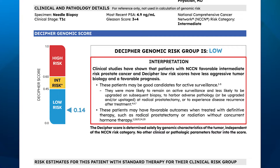On the right side of the Decipher genomic score section, you'll find information from clinical studies that are relevant to the particular patient based on their Decipher genomic risk group and their clinical presentation. This section also includes the newest evidence from analysis of multiple Phase III randomized controlled trials. These studies have shown consistent findings: those individuals with higher genomic risk scores have better outcomes when therapy is intensified, whereas those with lower genomic risk have a favorable prognosis with less intensive therapy.